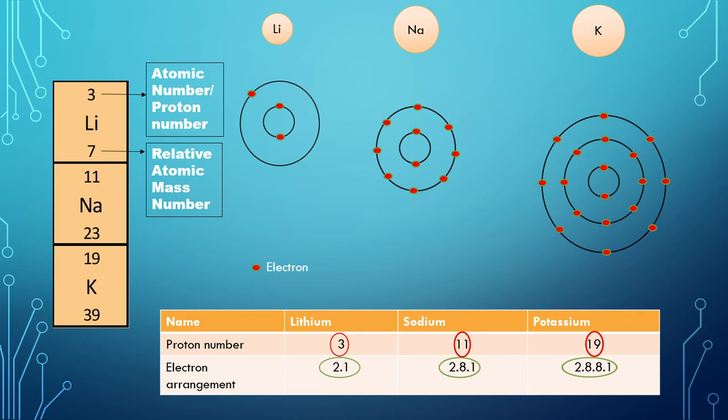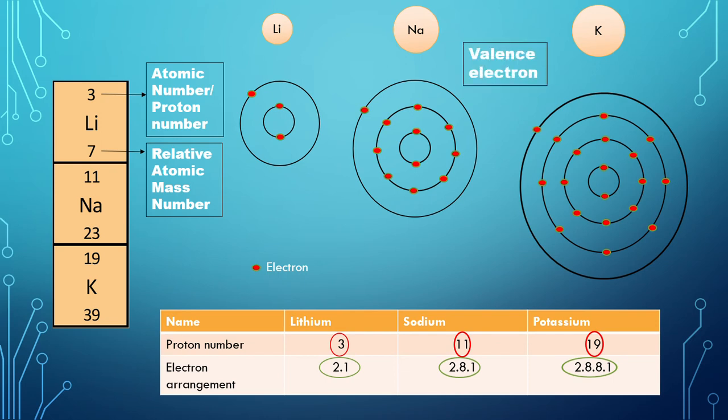If you notice, a similar electron arrangement is noticed for lithium, sodium and potassium whereby the outermost shell contains one valence electron. This is why these elements are classified as group 1 elements. As such they share similar physical and chemical properties.